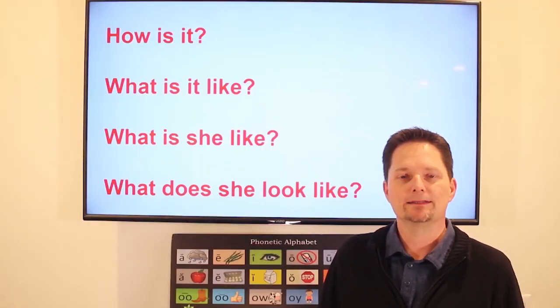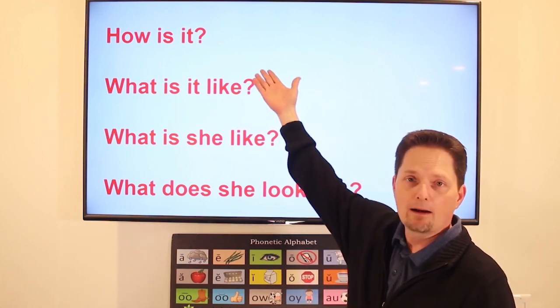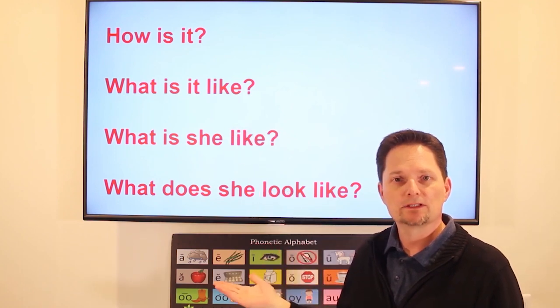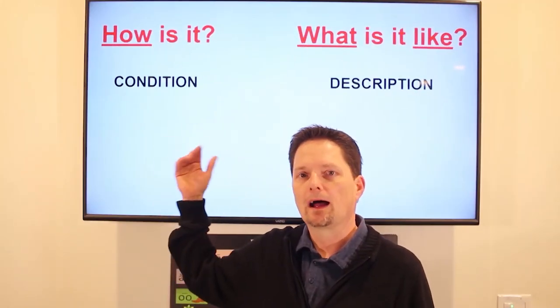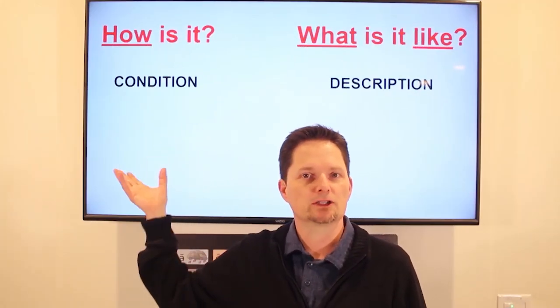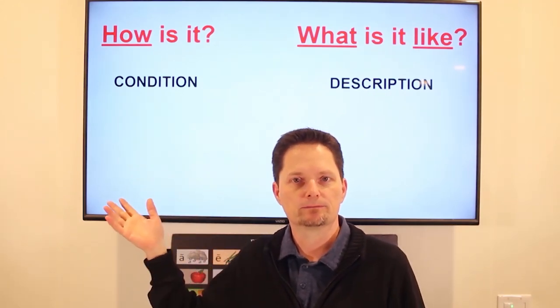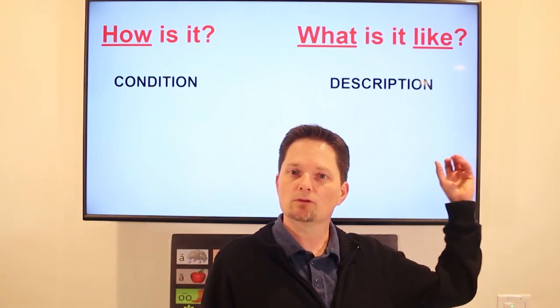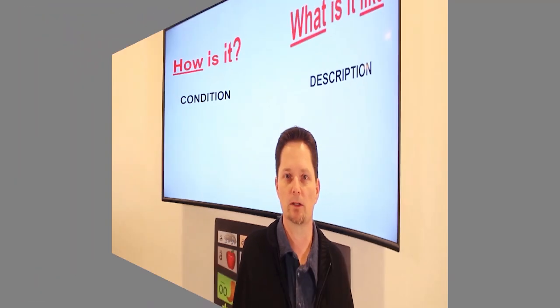Today we're looking at the differences between some similar questions. We'll look at the difference between 'how is it' and 'what is it like,' and the difference between 'what is she like' and 'what does she look like.' The question 'how is it' is a question for condition — is it good? Is it bad? Only condition. But if you want more information, you want a question for description: 'What is it like?'